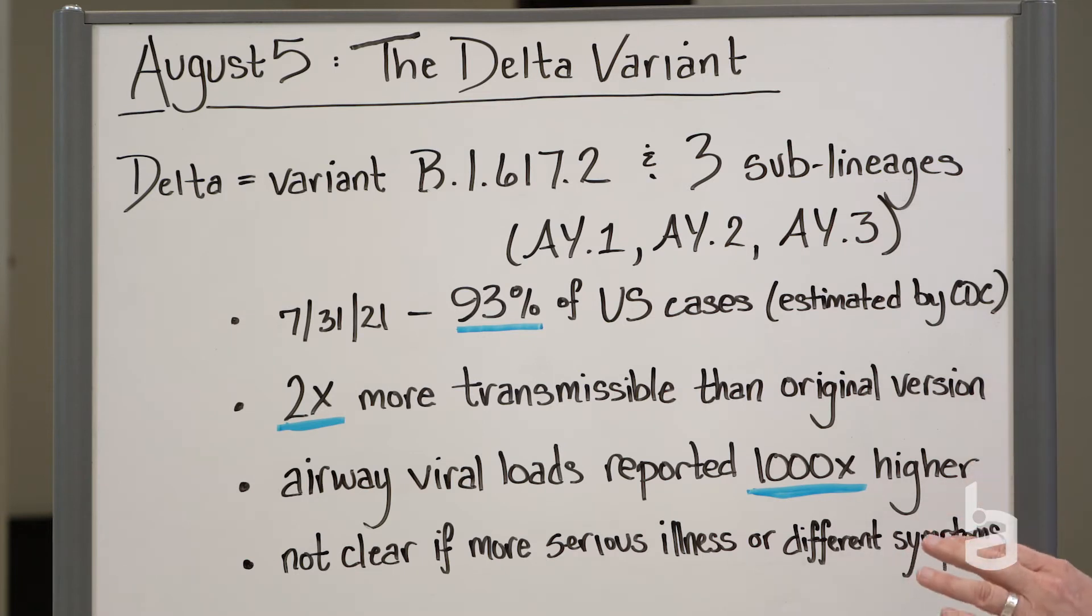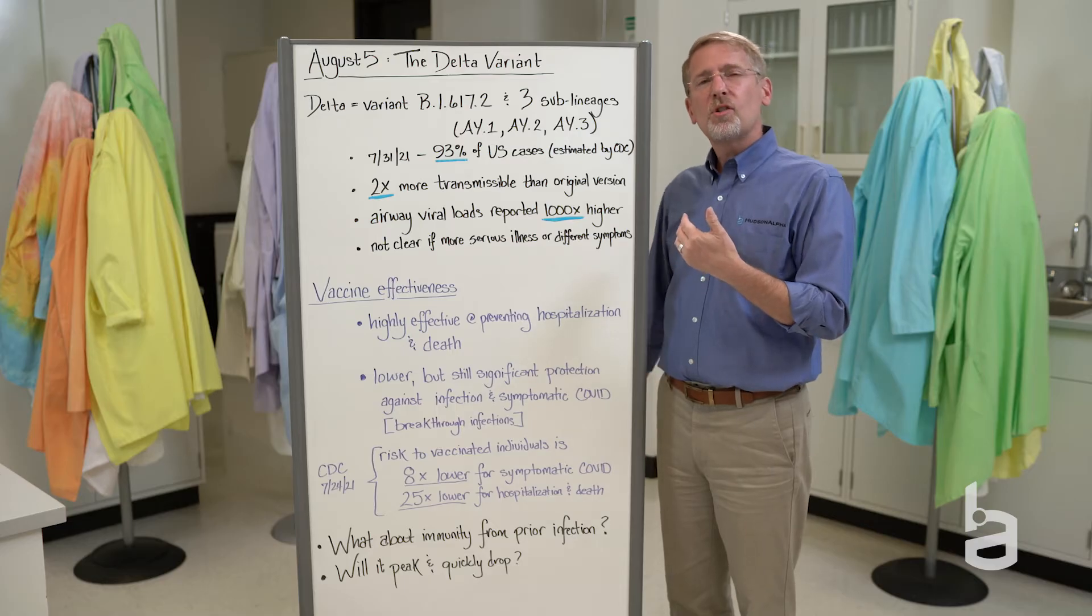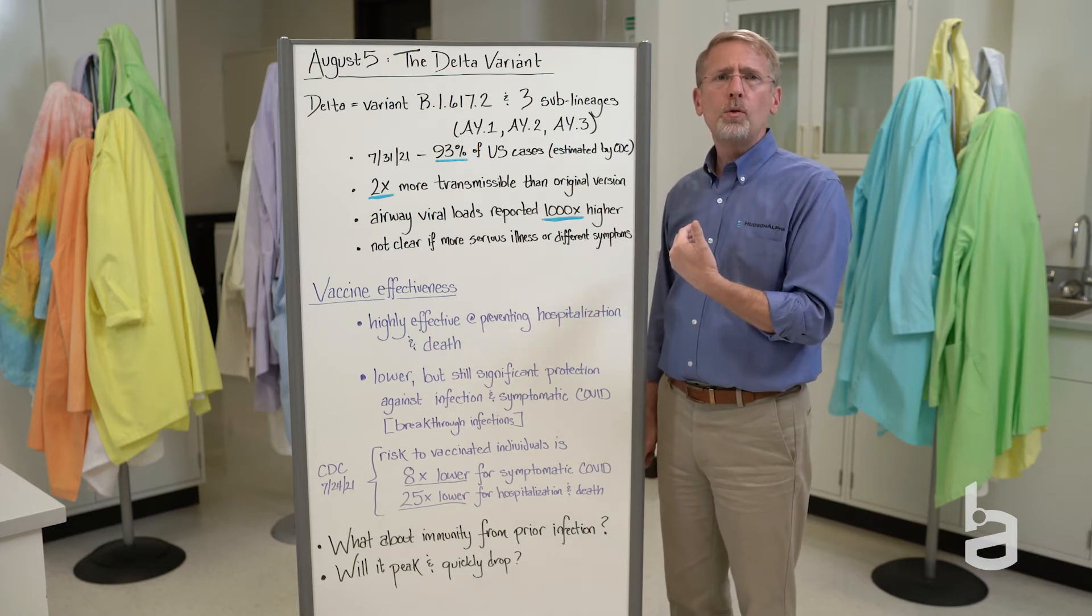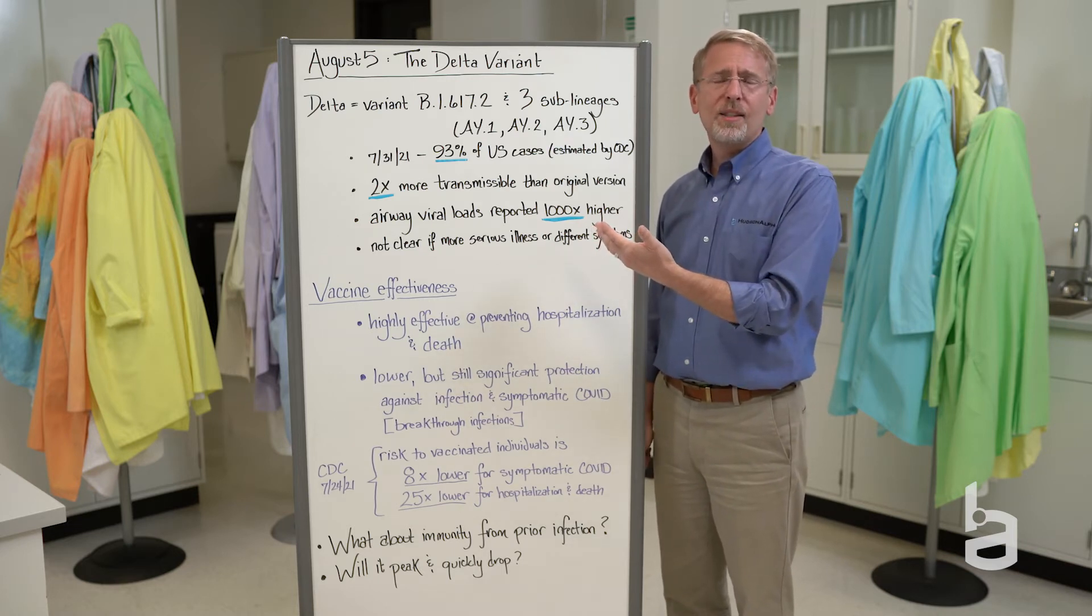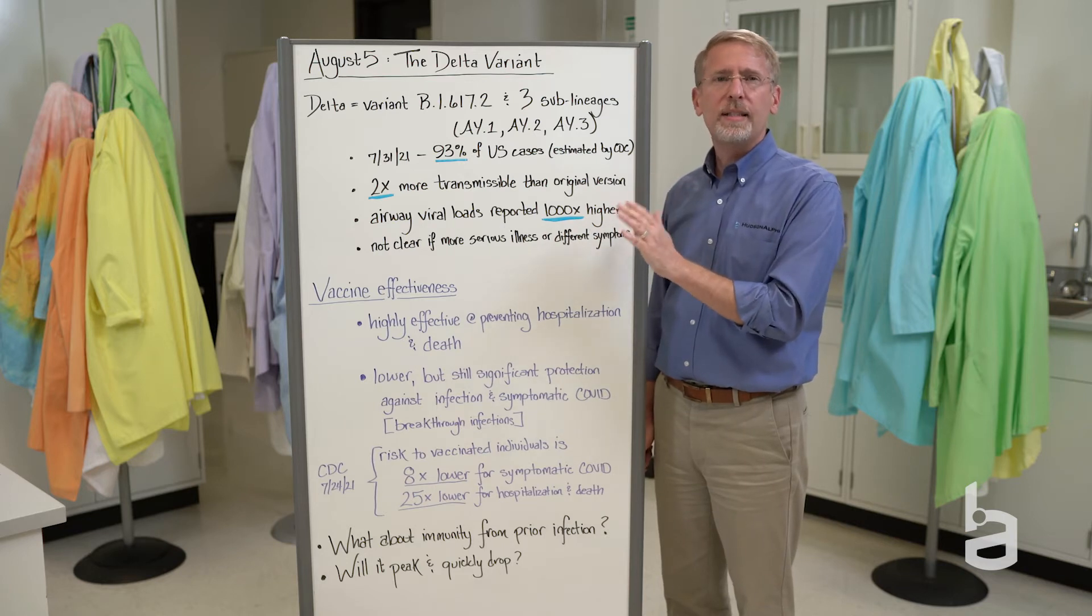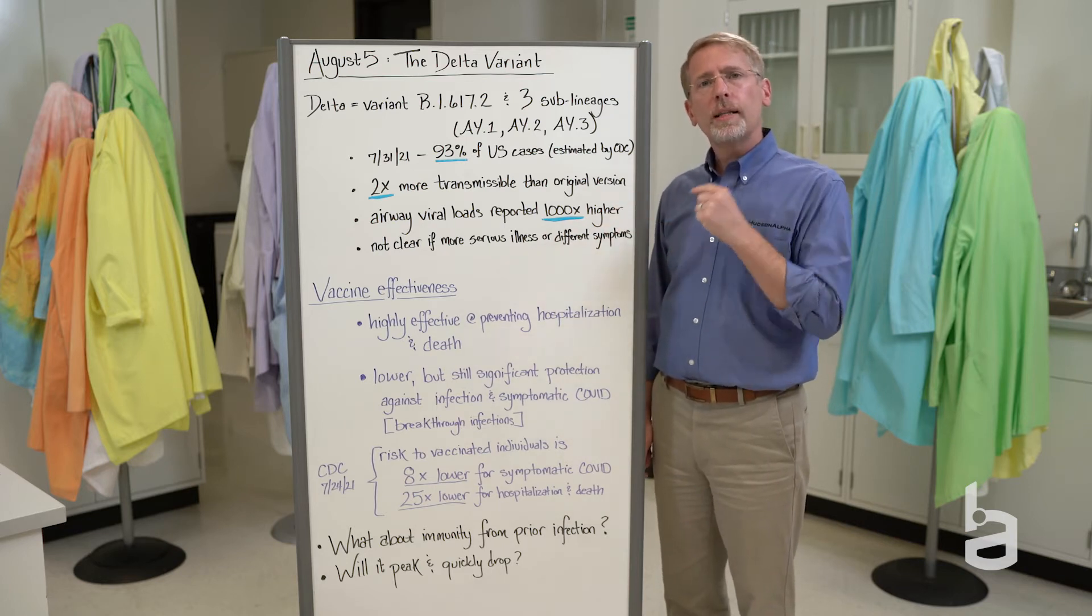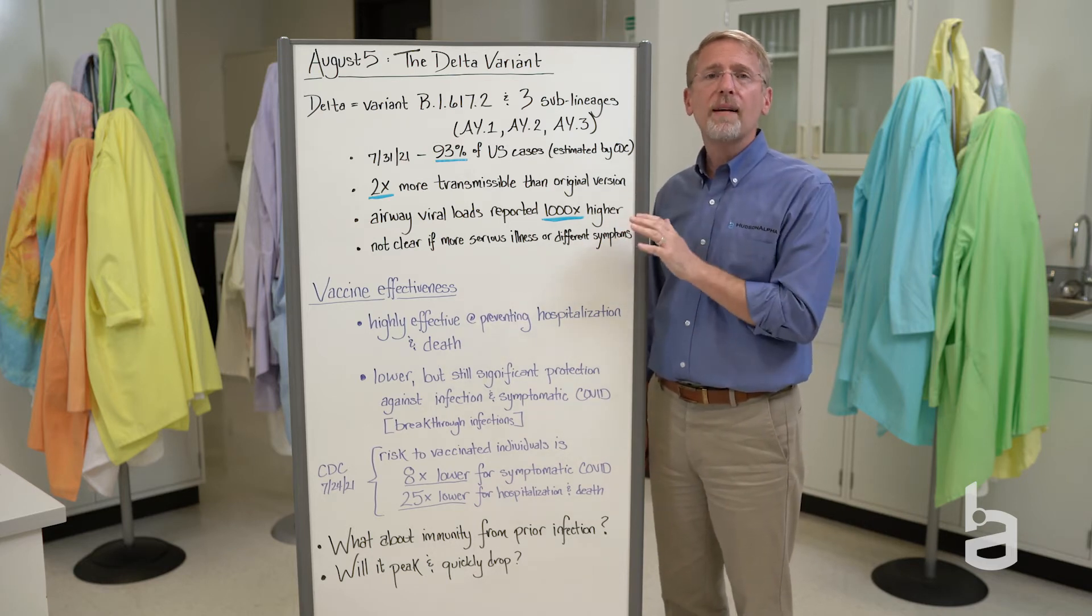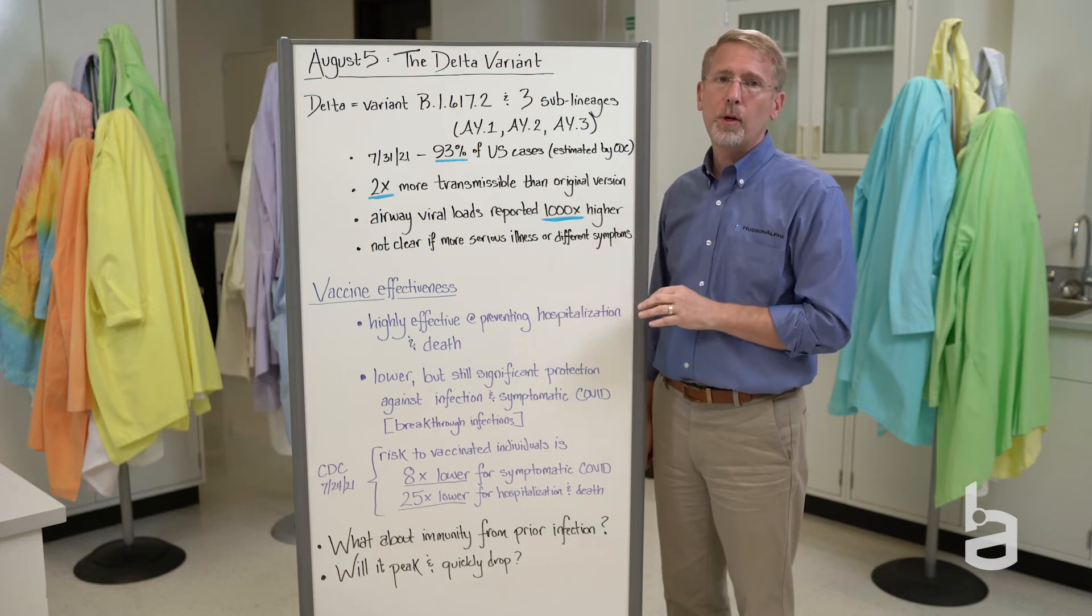It's not clear if the symptoms of the Delta variant are significantly different from the other prior versions of the virus. There's some suggestion that you might see more runny nose, that you might see less loss of taste and smell, but that's not definite yet. It's also not clear if this version of the virus is more severe, if it causes a more severe set of symptoms. We've got to have more data before we can answer either of those questions.